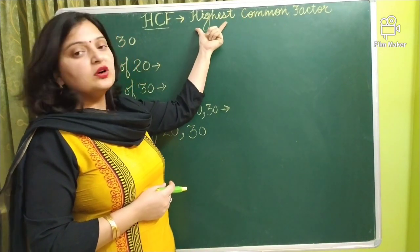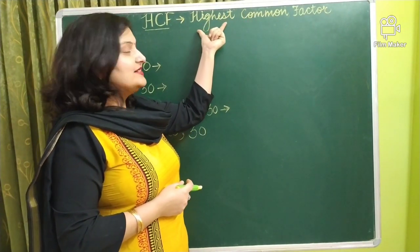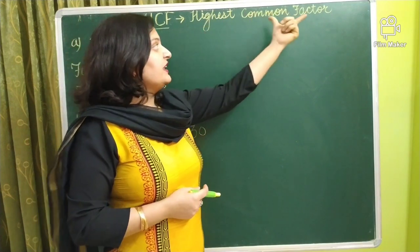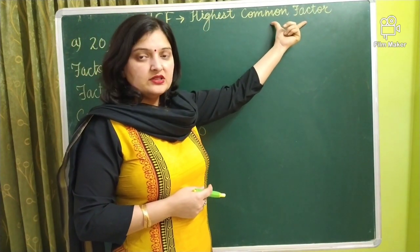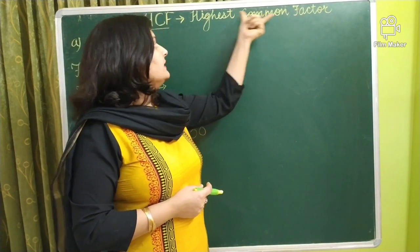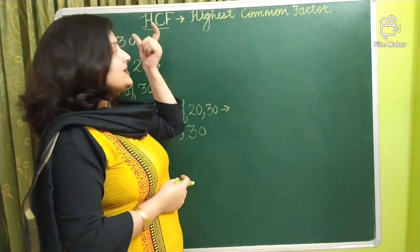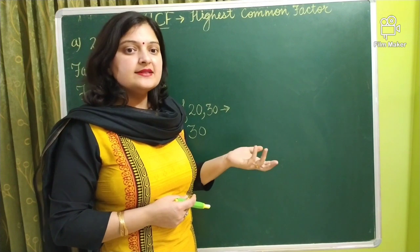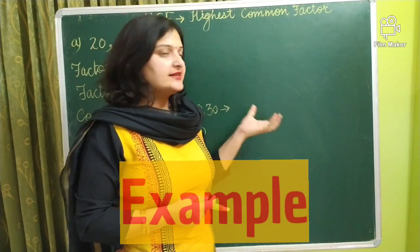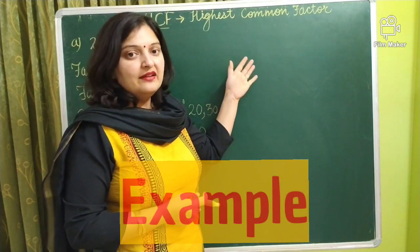Now only one word is left to understand and that is highest. It means when we find the common factors of few numbers, the highest one is called highest common factor. So let us discuss it with an example or let us understand it with an example.